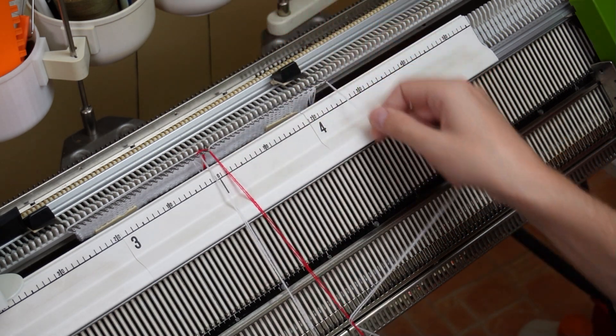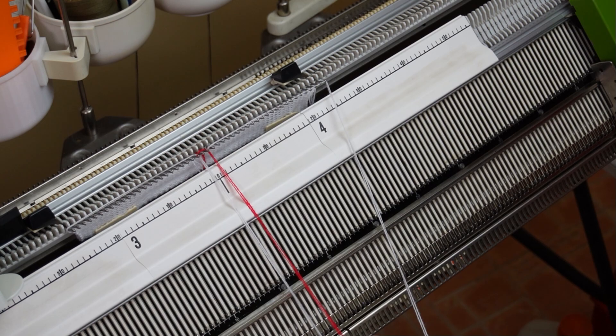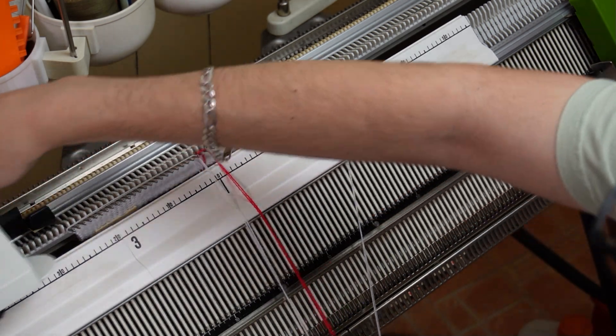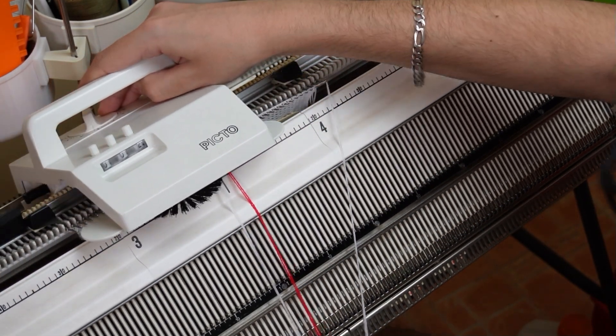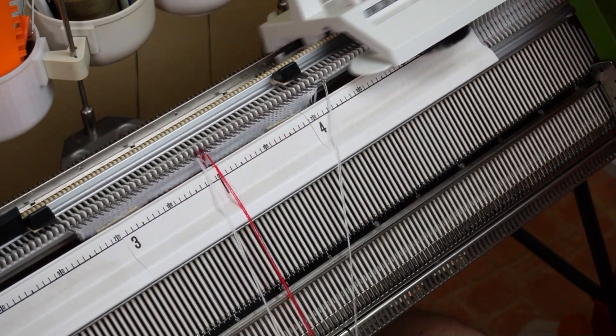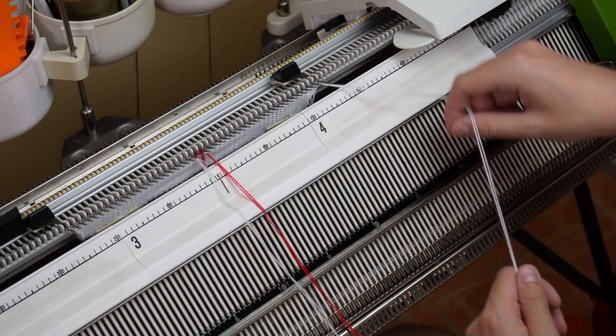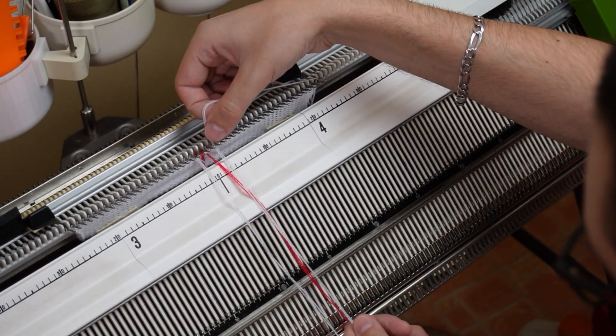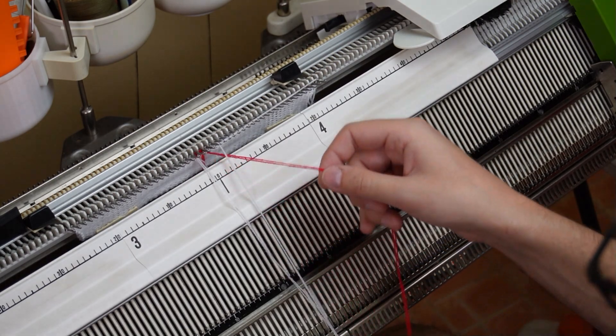For the second row I must have two red stitches in the middle as for the first one. Now knit the second row. Now I should have four red stitches in the middle so I will arrange the strands for the second row of the chart.